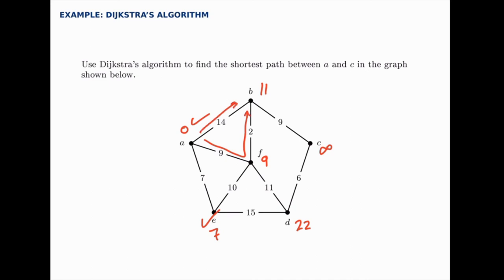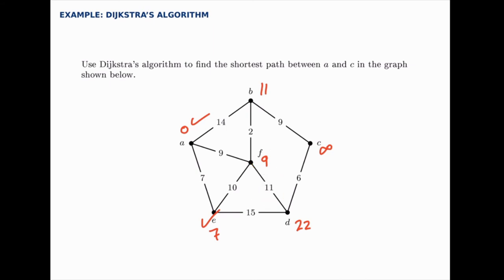That's what we found by doing this process. This is constructed carefully to be a very consistent step-by-step algorithm, because when you tell a computer how to do it you need a very consistent step-by-step approach. We found that the best distance to b is 11 by going through f. We can do the same with d: take the current 9 and add 11, giving us 20, which is better than the 22 that was there. So we can get to d faster going through f.